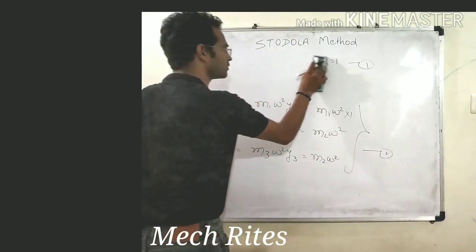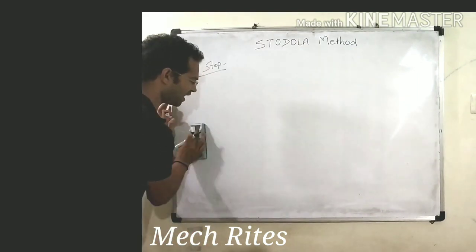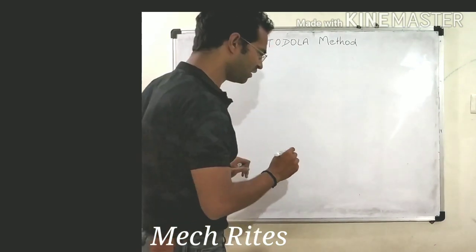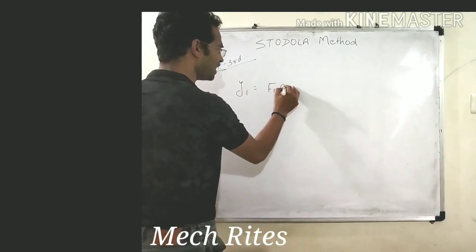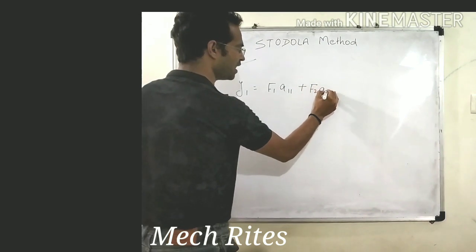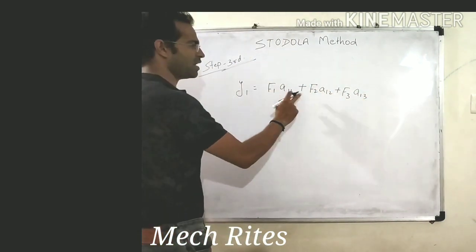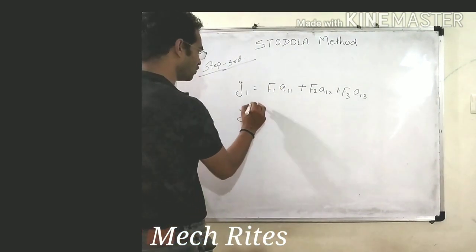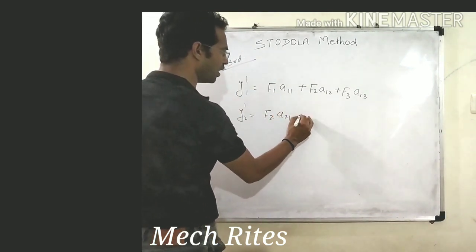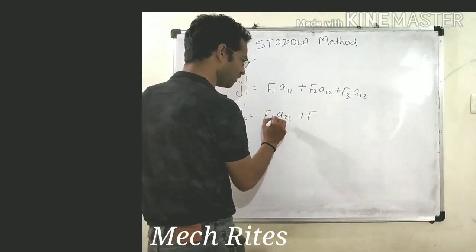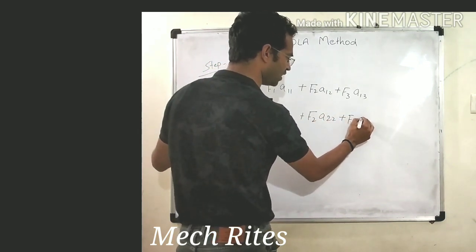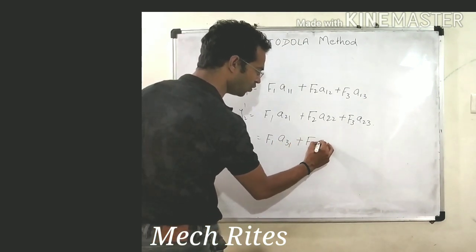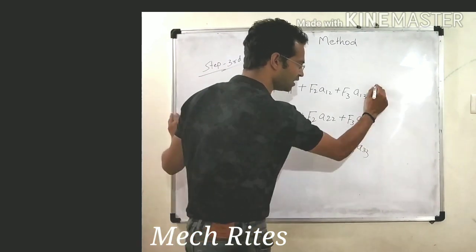Now come to the third step. In step number 3, we will find the new values of y using the influence coefficients. We know that y1 equals F1·a11 plus F2·a12 plus F3·a13, where a11, a12, a13 are the influence coefficients. Similarly, y2 and y3 are found using the corresponding influence coefficients. This is equation number 3.